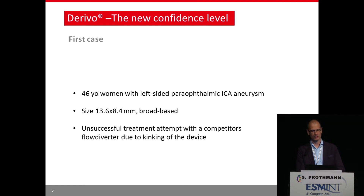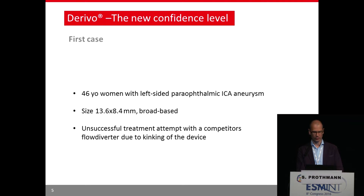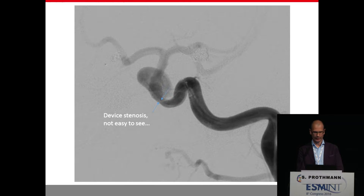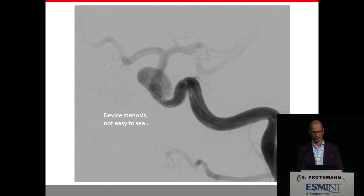Let's start with a case. It's a 46-year-old woman with a left-sided parophthalmic ICA aneurysm. She had a former SAH and this was an unruptured aneurysm but we wanted to treat it — it's almost 14 millimeters large. I used a competitor's flow diverter but had problems because the device did not open completely. It was not easy to see, and we had a device stenosis probably due to a twisting of the device.